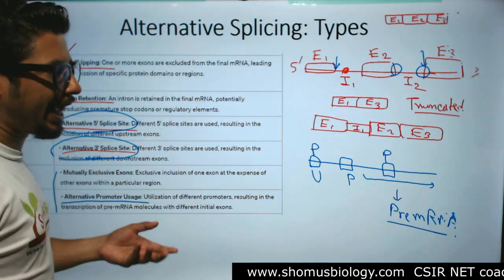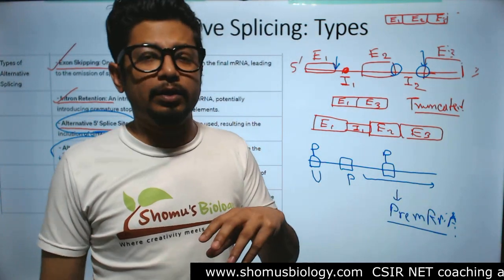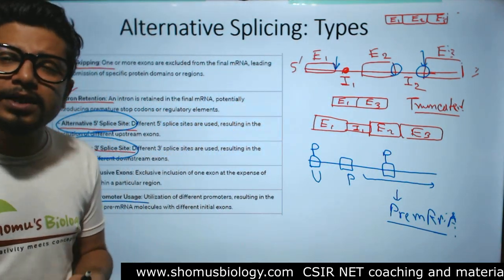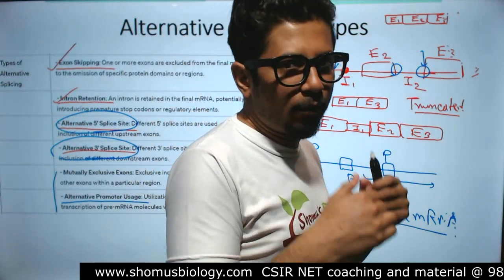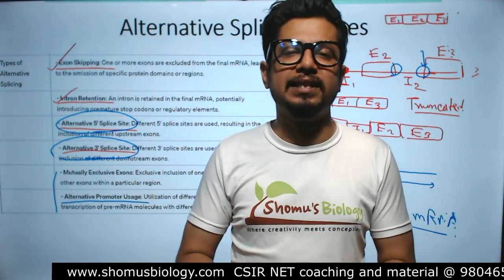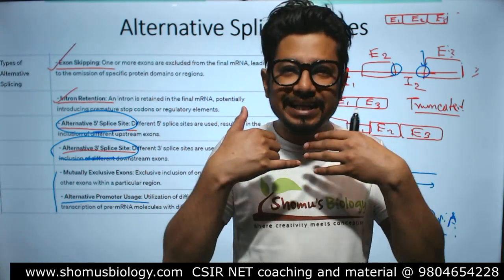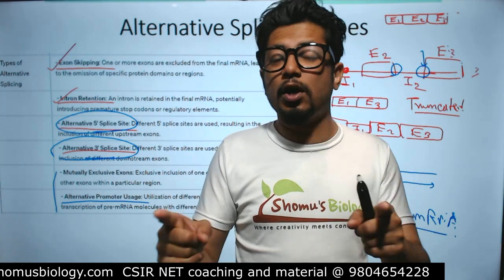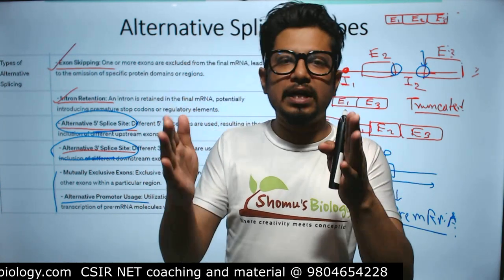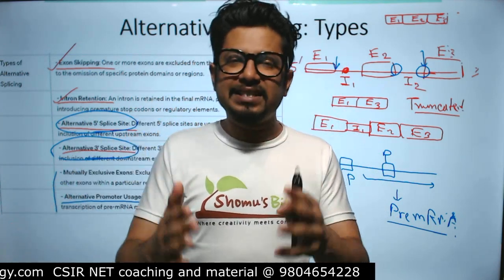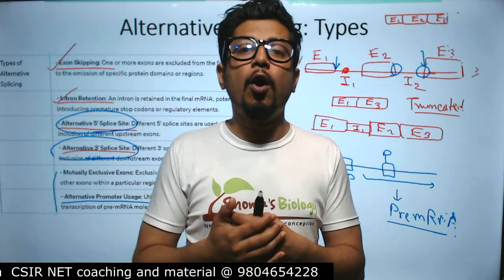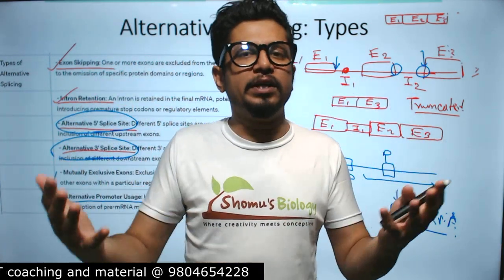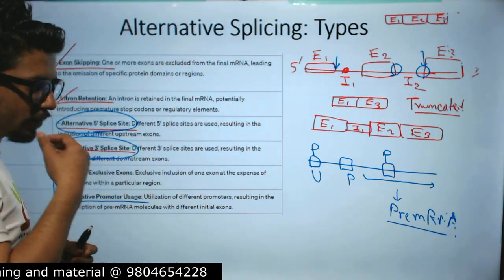These are the different types of alternative splicing mechanisms: exon skipping, intron retention, changes in 5' and 3' splice sites, and alternative promoter utilization. Alternative splicing is supported by the cell because it can increase the variety of proteins at any given point in time from the same stretch of mRNA — so even though the transcriptome remains the same, the proteome produced can be hugely varied.